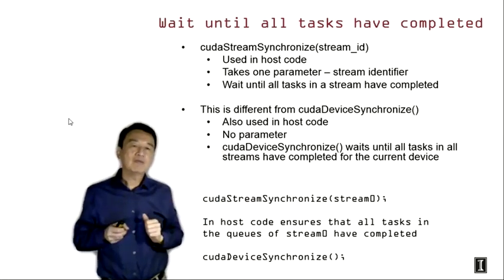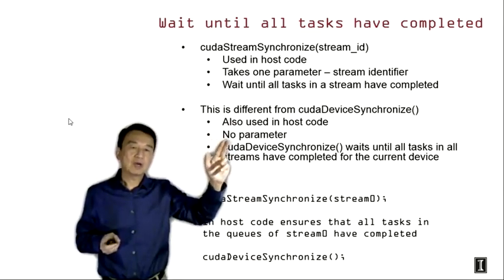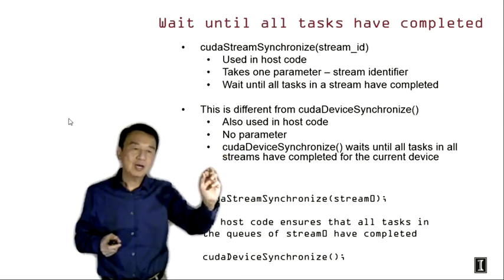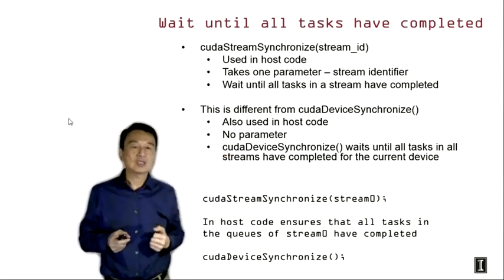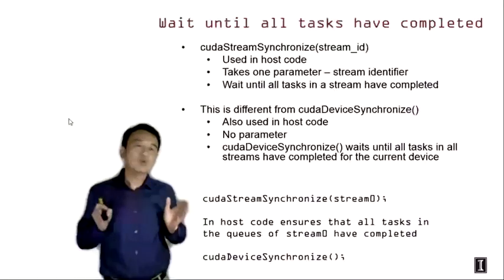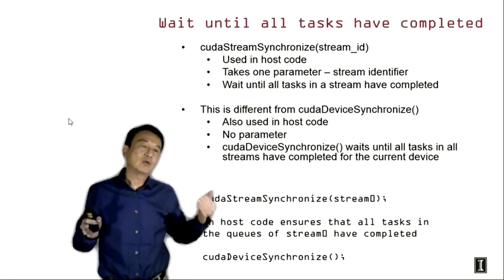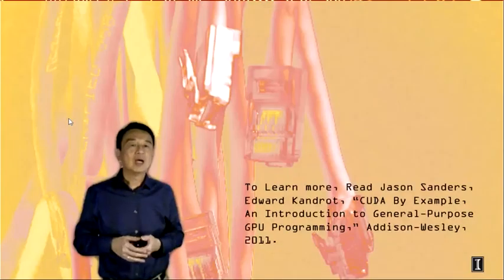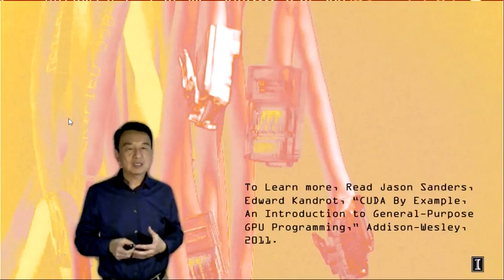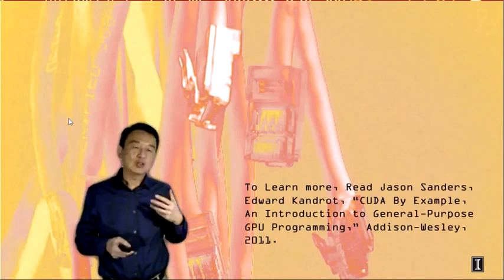There is another, more general instruction called cudaDeviceSynchronize. This is also used in host code, takes no parameter, and waits until all tasks in all streams have completed before the host code can continue execution. This is used whenever you really want to make sure all previous asynchronous operations in all streams have completed before the host code tries to use data structures or perform the next batch of operations. This brings us to the end of week six, and you are now ready to do the lab assignment on streamed vector addition.